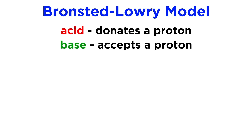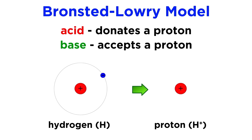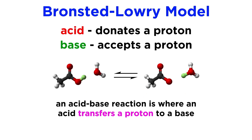We already know that under the Bronsted-Lowry model, acids are proton donors and bases are proton acceptors. When we say proton, what we are referring to is a positively charged hydrogen ion. Since a typical hydrogen atom consists of simply one proton and one electron, an H+ ion is actually just a proton, or the nucleus of the hydrogen atom. Proton transfer is the most common framework from which we will be discussing acidity and basicity, so we should get used to thinking of an acid as something that can give up a proton, and a base as something that can accept a proton.